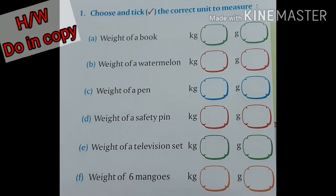Number A, weight of a book. Number B, weight of a watermelon. Number C, weight of a pen. Number D, weight of a safety pin. Number E, weight of a television set. And number F, weight of 6 mangoes.